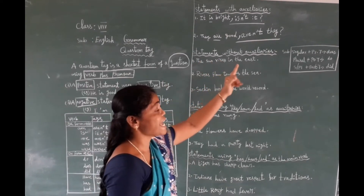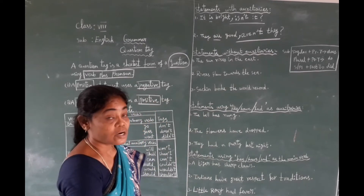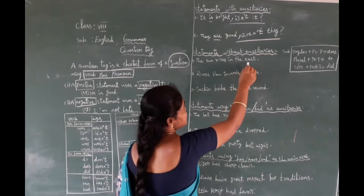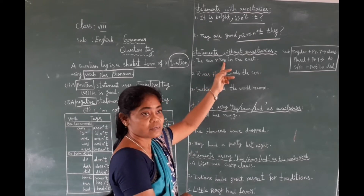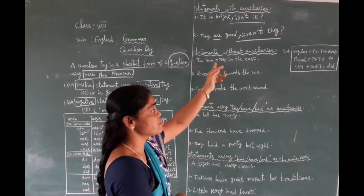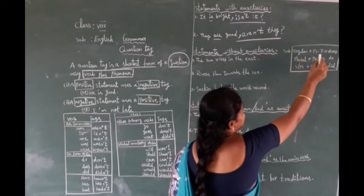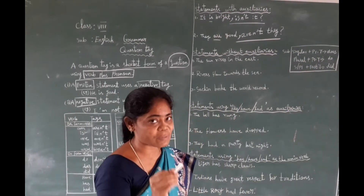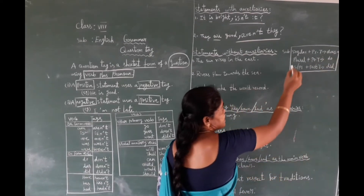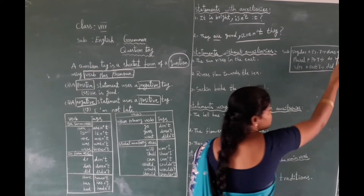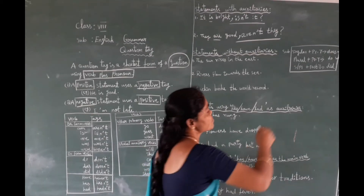For statements without auxiliaries, consider: 'The sun rises in the east.' Here 'the sun' is the subject, 'rises' is the verb — a main verb only, no auxiliary. In such cases, we follow these rules: subject singular plus present tense — use 'does'; subject plural plus present tense — use 'do'; subject singular or plural with past tense — use 'did'.